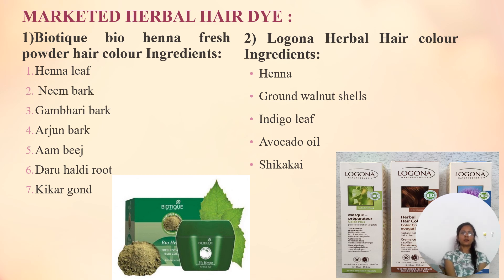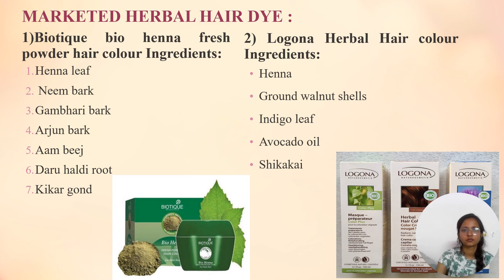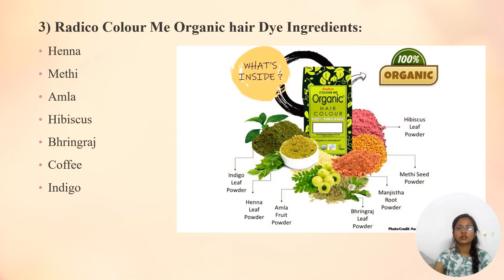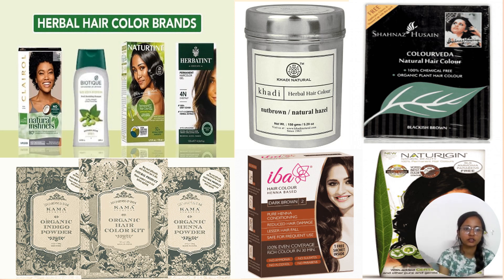Some examples of marketed herbal hair dyes are: Biotique Bio Henna fresh powder hair coloring, which includes Henna leaf, Neem bark, Jamberi bark, Arjun bark, Aam Bees, Daru Haldi root, and Kikar gold. Loreal herbal hair color ingredients include Henna, Crown walnut shell, Indigo leaf, Avocado oil, and Shikakai. Radico Color organic ingredients are Henna, Methi, Amla, Havisgan, Bhringraj, Coffee, and Indigo. Other herbal hair color brands include Khadi, Sainas, Kama, IBA, Nutrient, Herbal Tint, and Biotique.